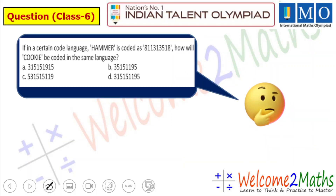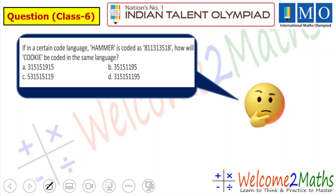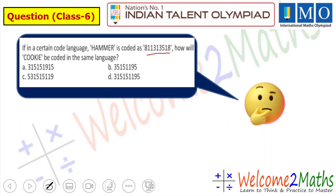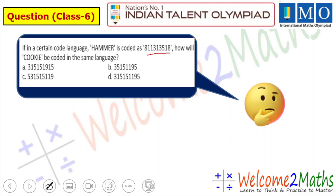This is our first question, from class 6. What is the question? If in a certain code language 'hammer' is coded as 81131351, how will 'cookie' be coded in the same language? That you have to find out.